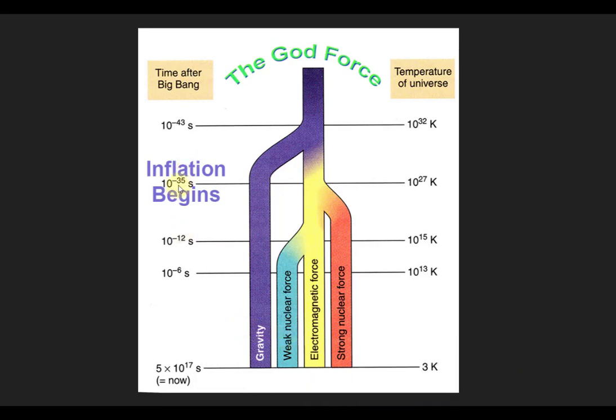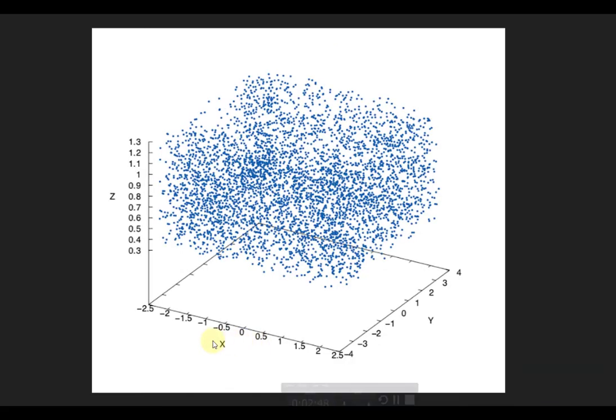Between 10 to the minus 35 seconds and 10 to the minus 33 seconds, the universe is going to go through a period called the inflationary period — this is when inflation begins. At this point, the speed of light is far, far greater than the speed of light is today. During this period, gravity works like anti-gravity, and this is the bang in the Big Bang.